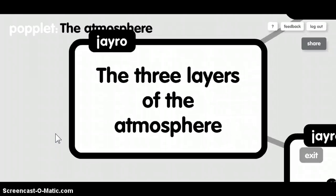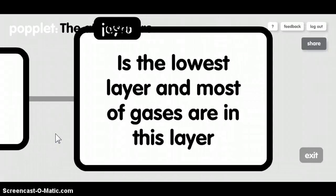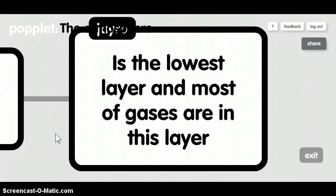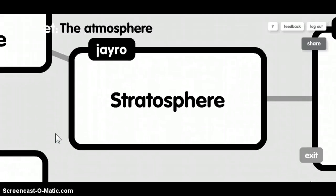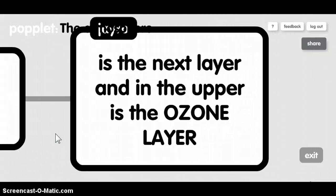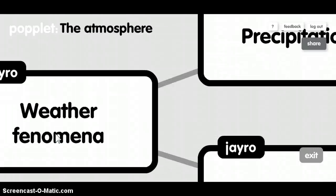The three layers of the atmosphere are: the Troposphere, which is the lowest layer and most of the gases are in the air in this layer. The Stratosphere is the second layer and in the upper part is the ozone layer.